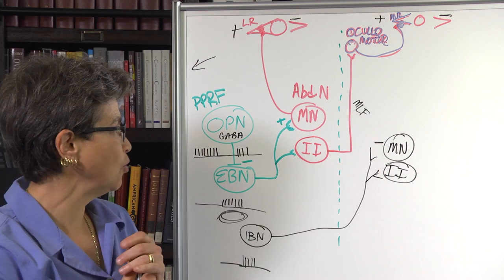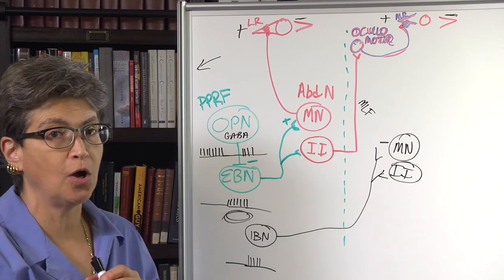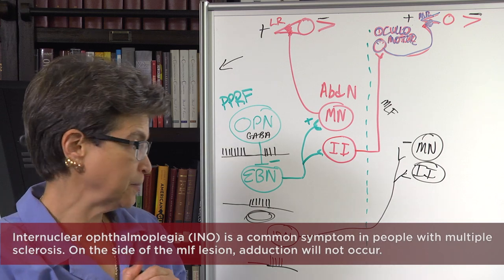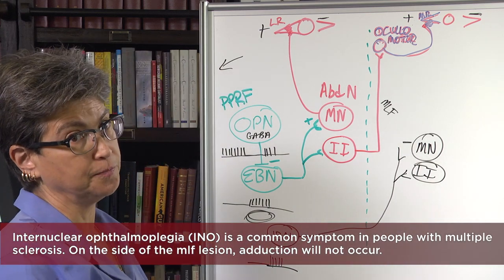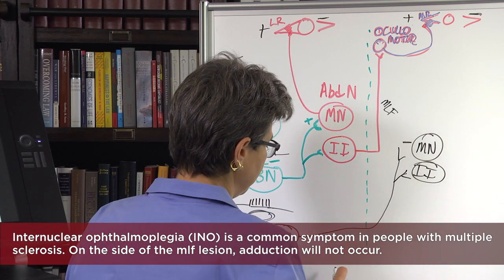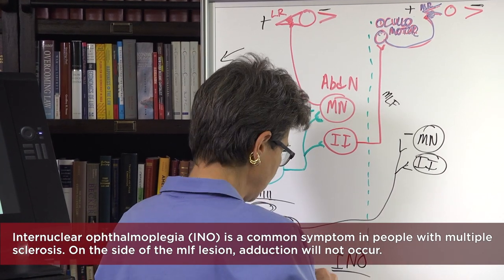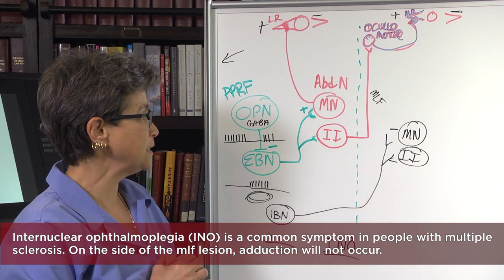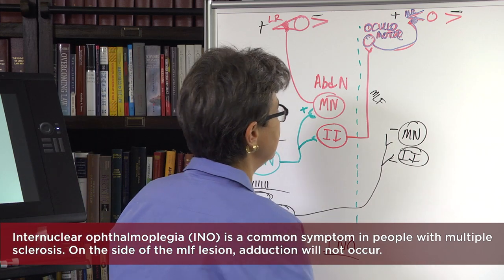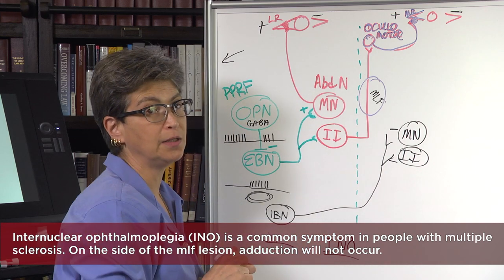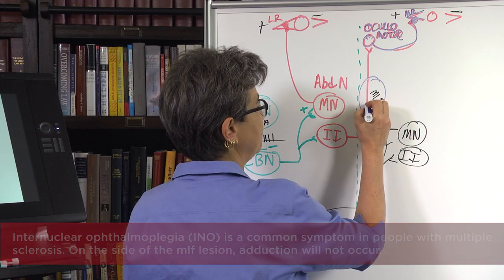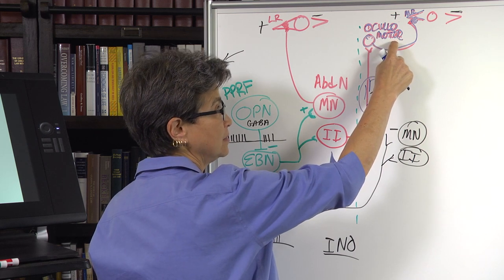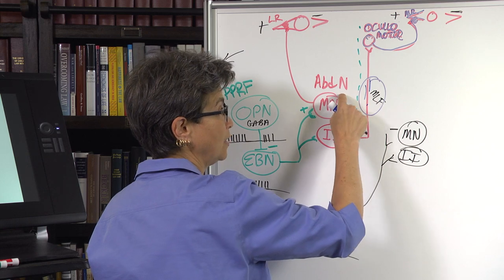That's how the saccade works. Now, what could possibly go wrong? The most common thing that goes wrong — and you will see this clinically and on boards — is called internuclear ophthalmoplegia, or INO. One reason it's so common is because it happens in people with multiple sclerosis. The MLF pathway is extremely heavily myelinated, so if there's demyelination here, the yoking of the medial rectus motor neuron to the abducens motor neuron doesn't happen.